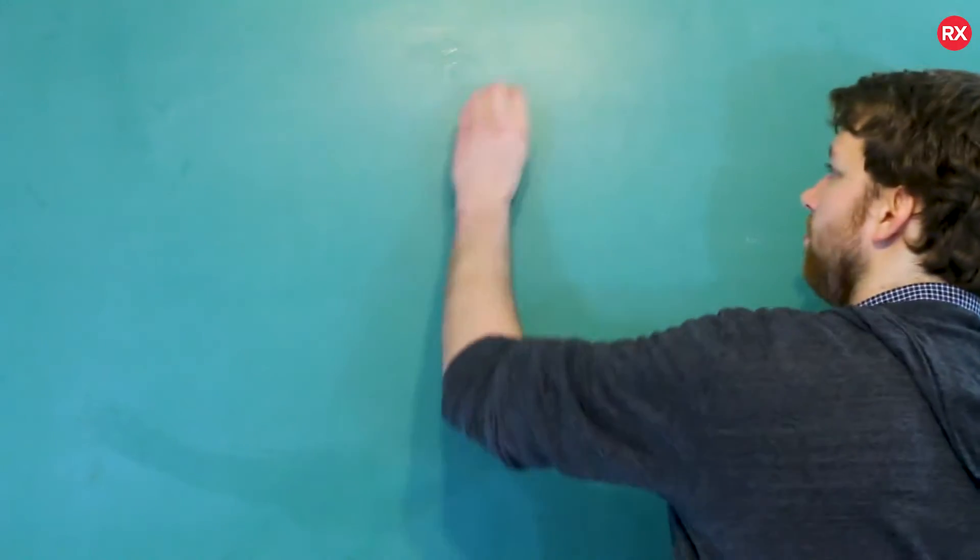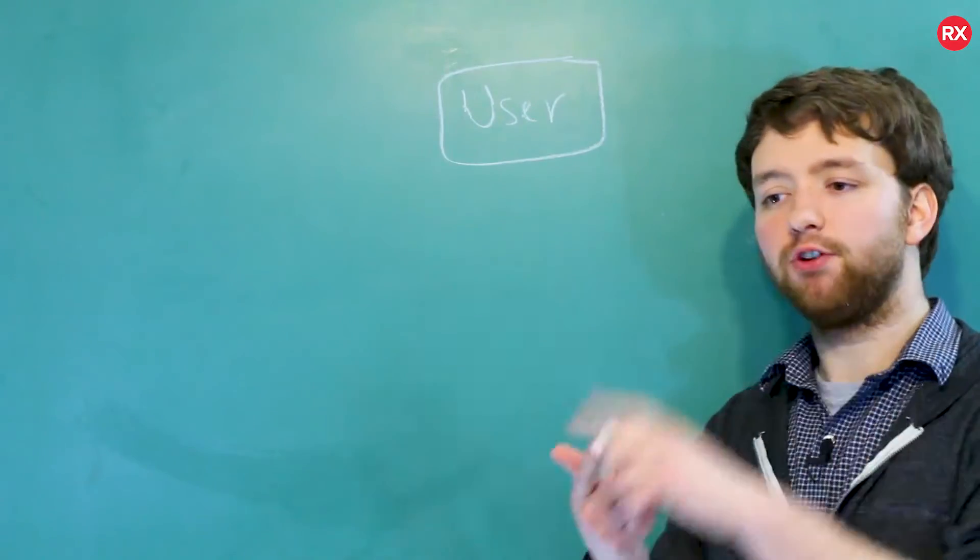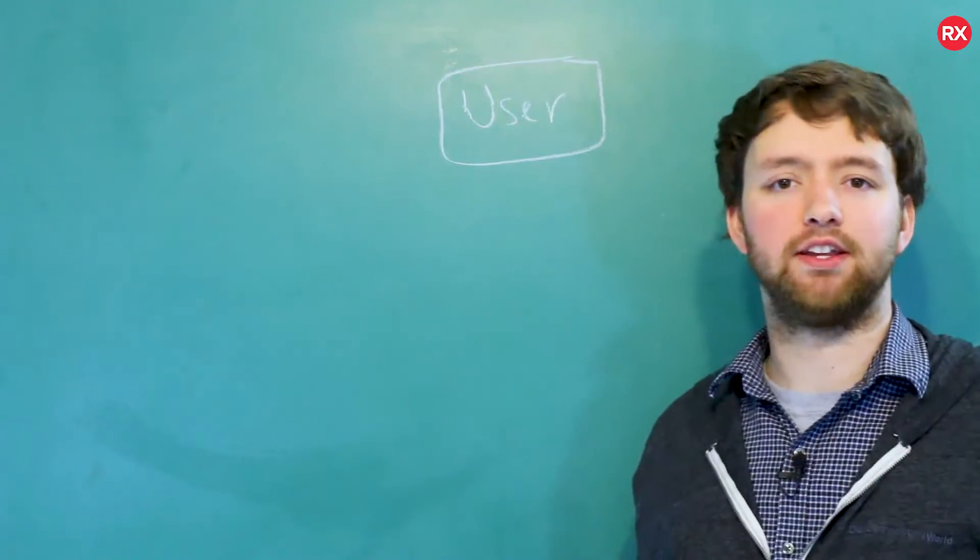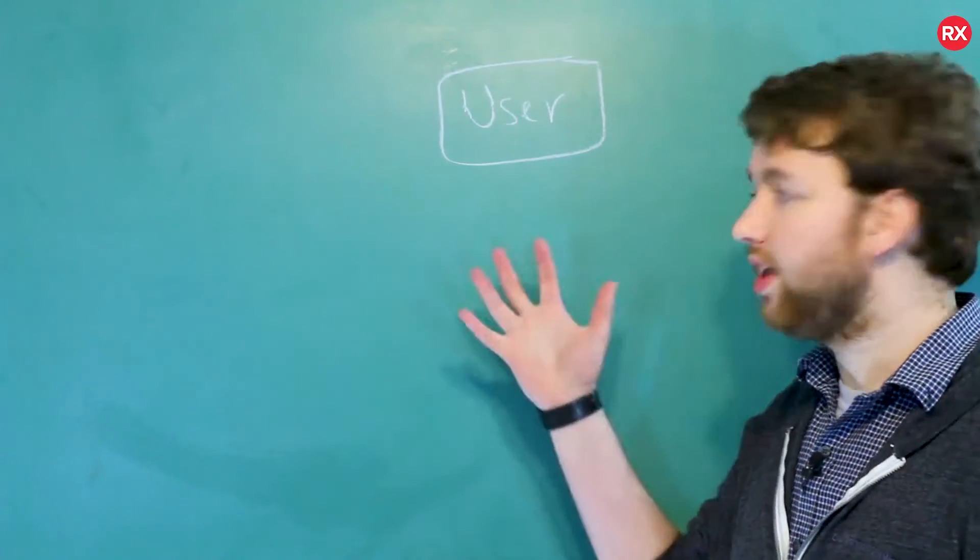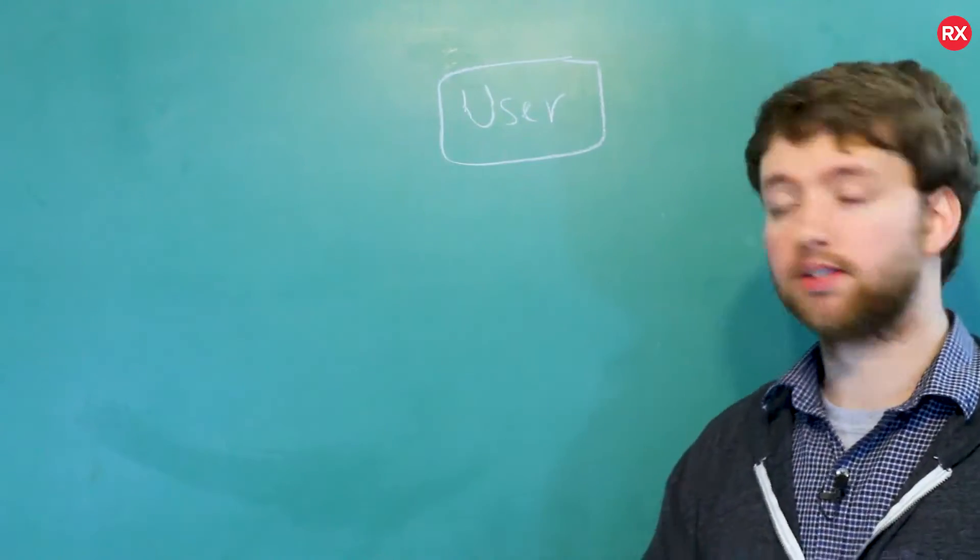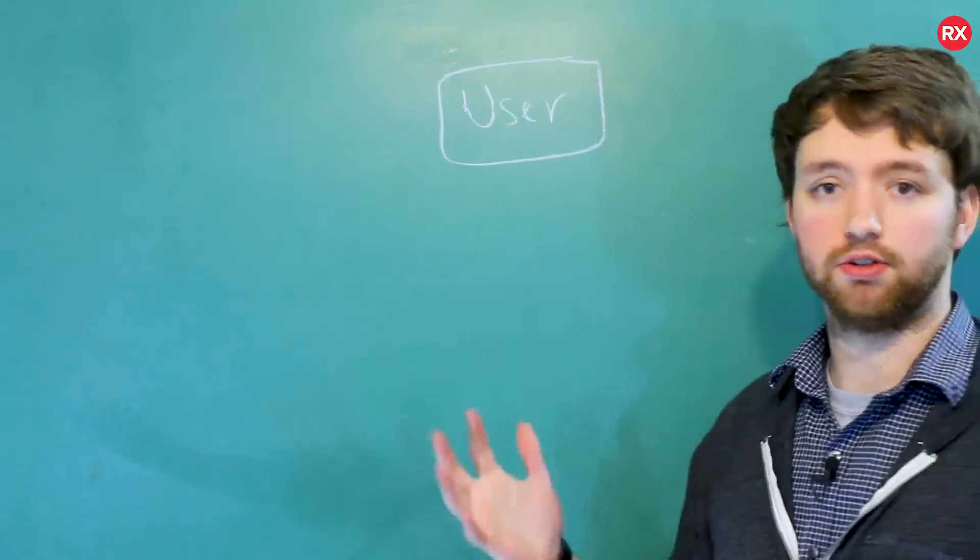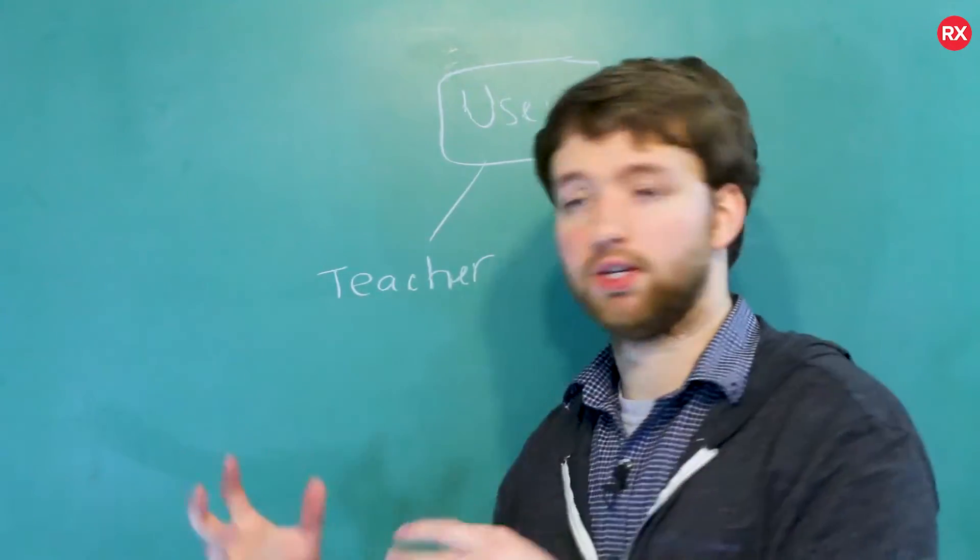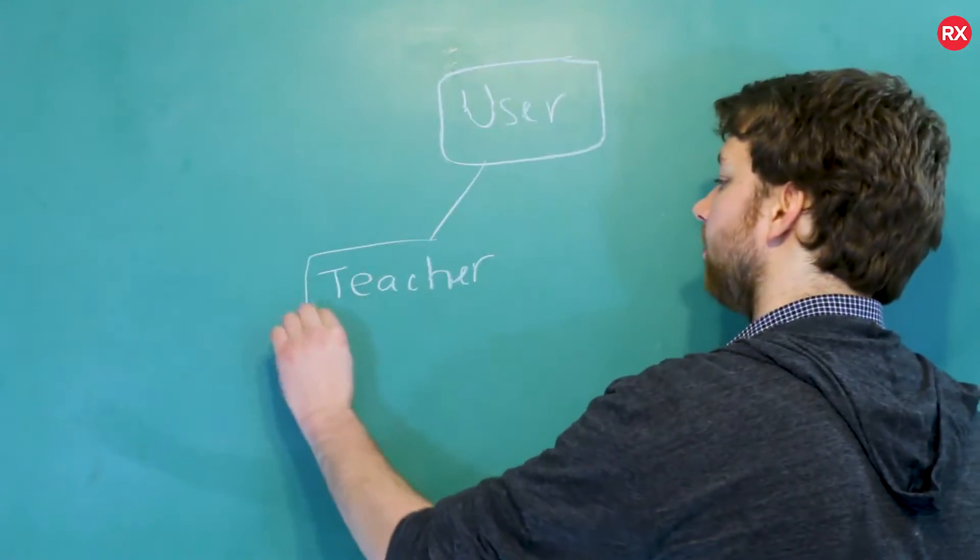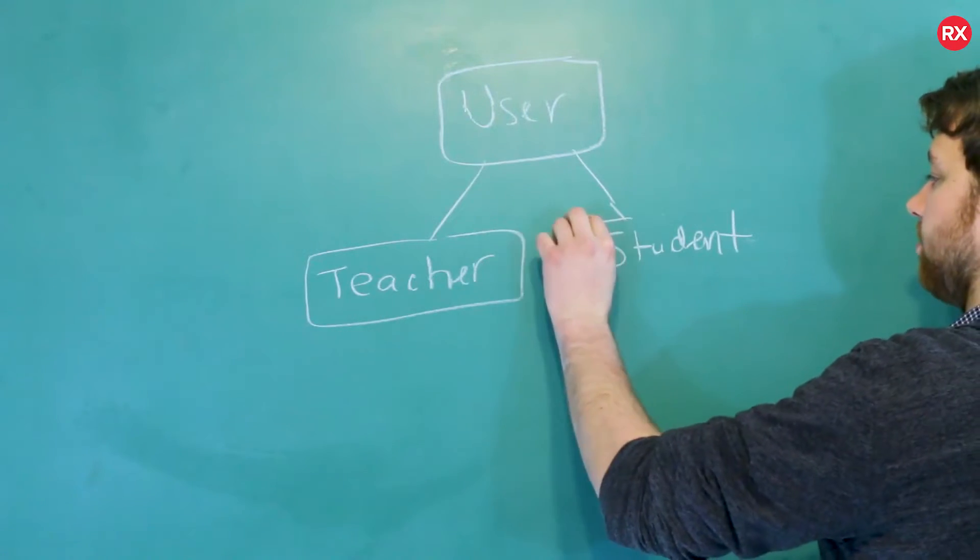So for example, we might have a user class, and this might have first name, last name, status, email, or whatever we want to contain about a particular user. And then we might have what are known as subclasses that inherit from this user class. Let's say we're making an application for teachers and students. You might have a teacher class, and you might have a student class.